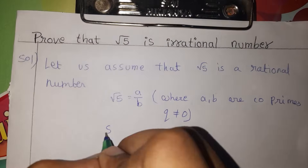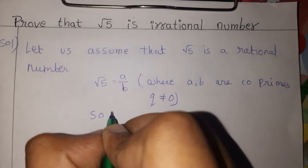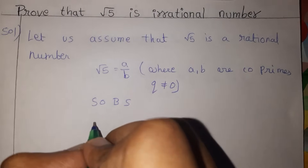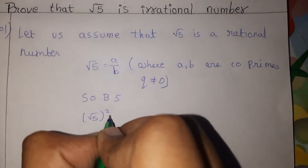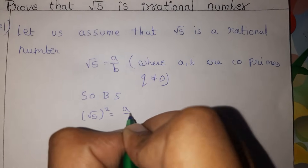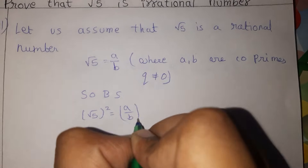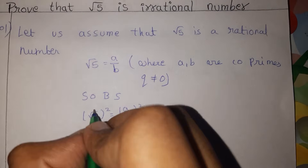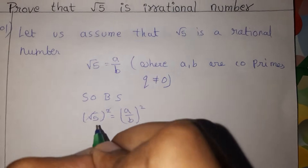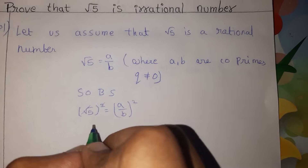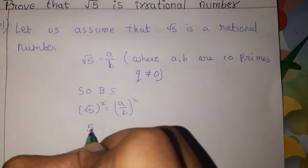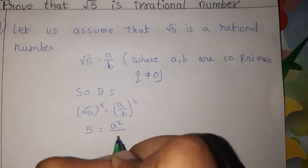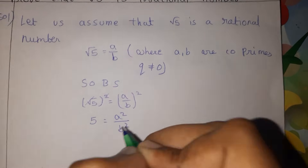So here we are going to solve by squaring on both sides. Root 5 whole square is equal to a by b whole square, so 5 is equal to a square by b square.